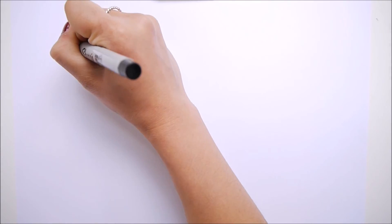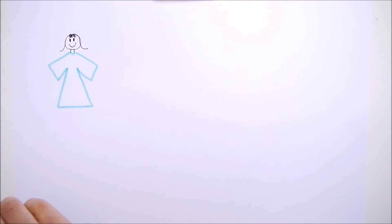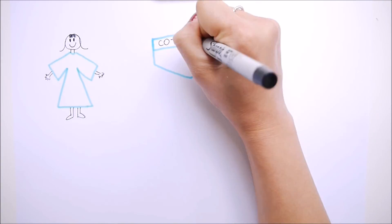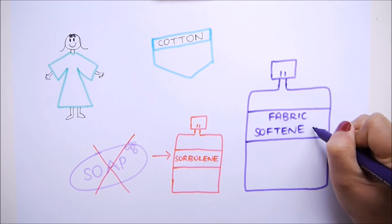You can prevent the symptoms of thrush by wearing loose clothing, wearing cotton knickers, not using soaps on your lady parts, sorbelene is a good cheap option, and maybe skipping fabric softeners when washing your undies.